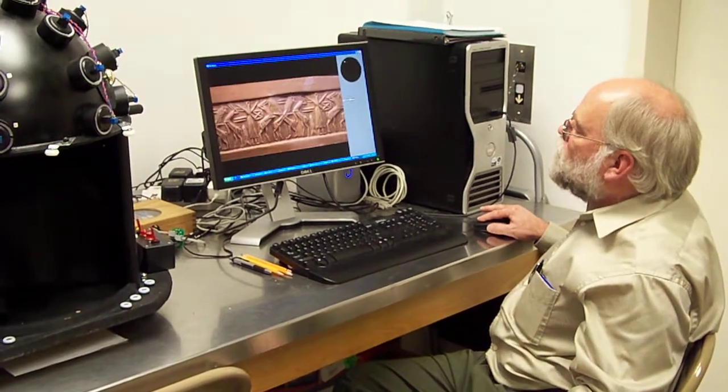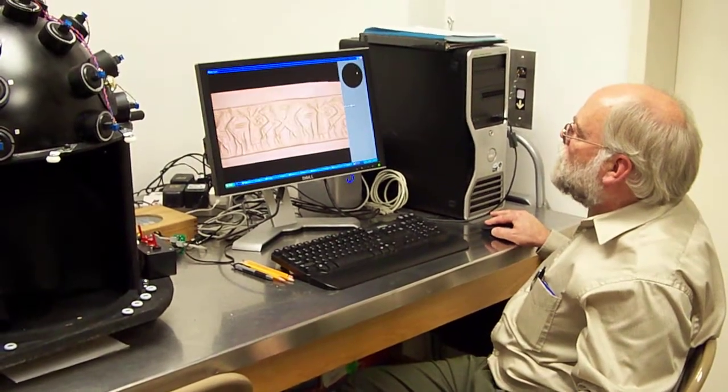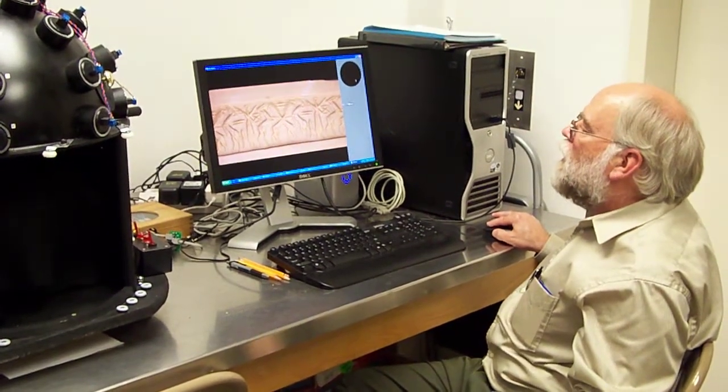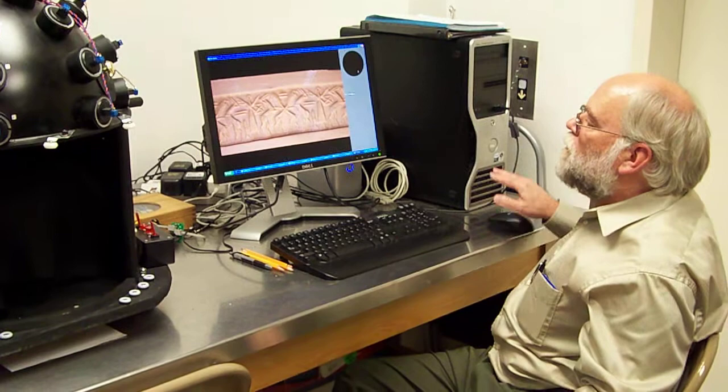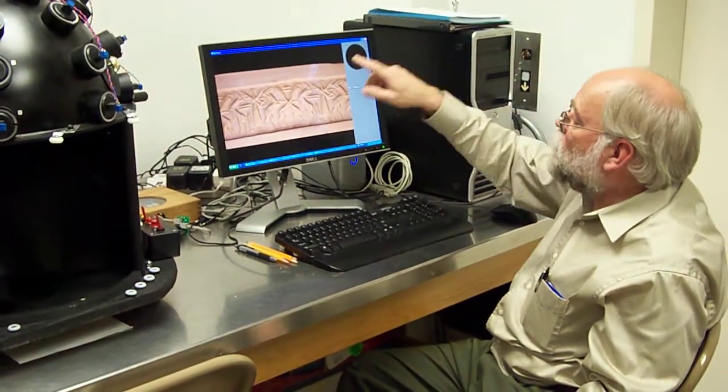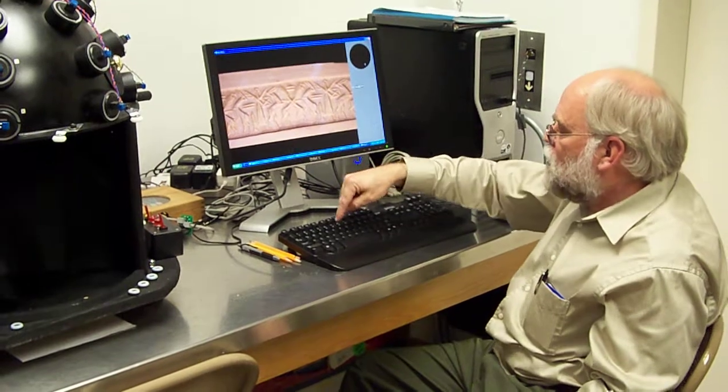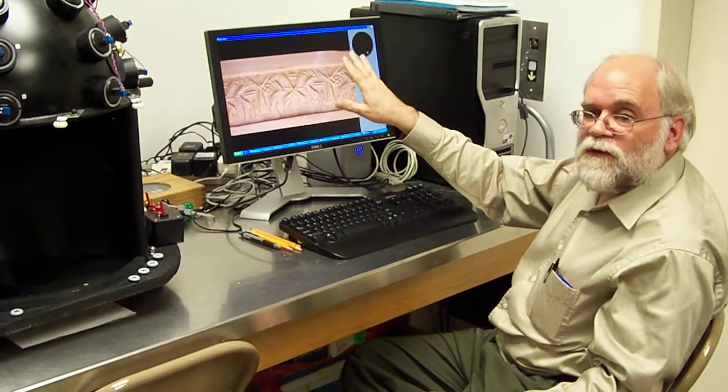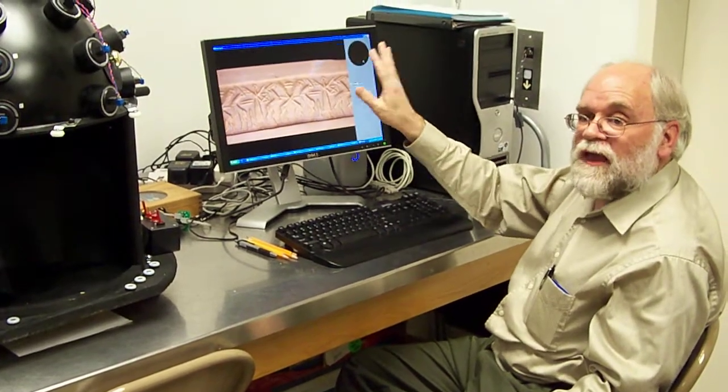And then you find a light angle that you particularly like, that shows up what you're most interested in. You hit the T key, and it takes a high resolution image of the picture at that light.